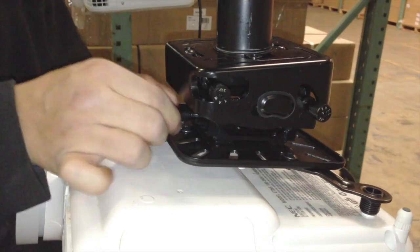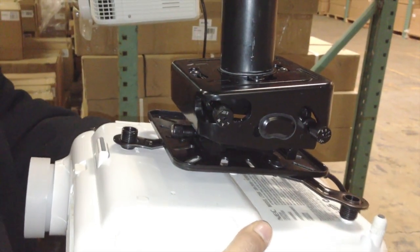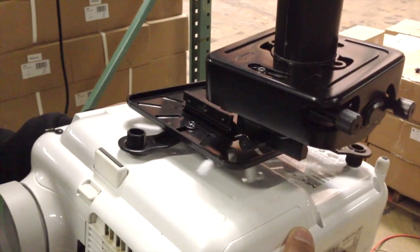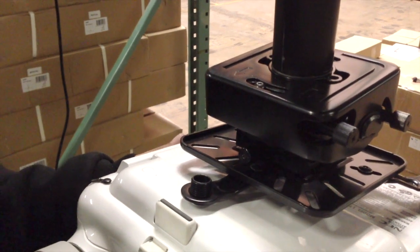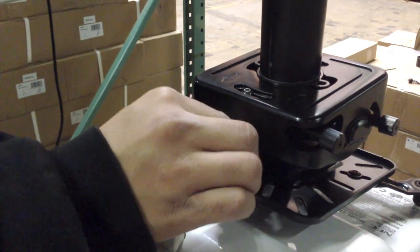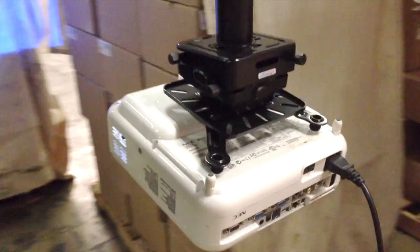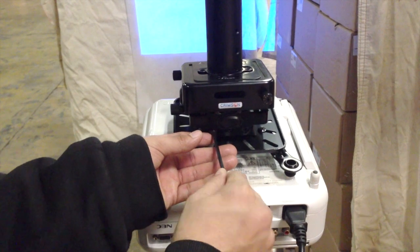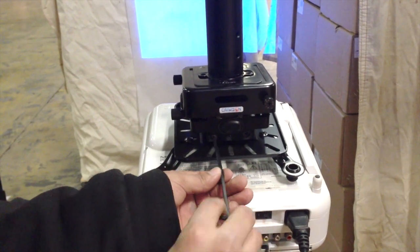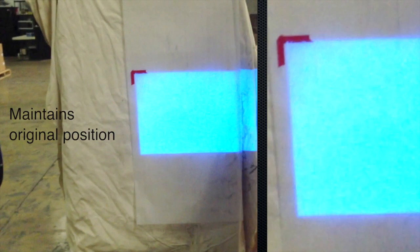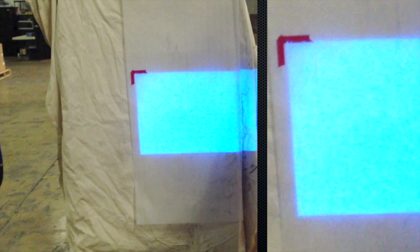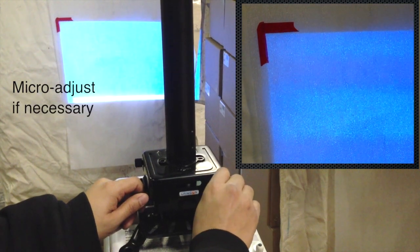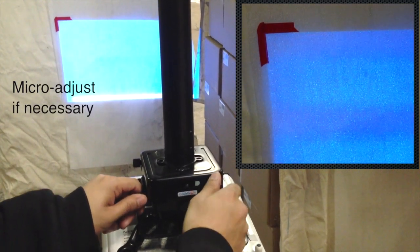When mounted with the JR3, the projector can easily be removed for maintenance and bulb replacement. The proper alignment will be preserved in most cases. After reinstalling the projector, micro adjust if necessary.